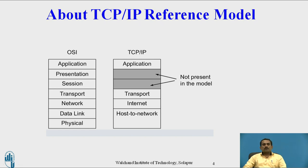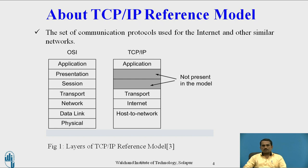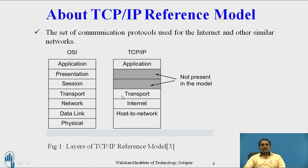TCP/IP Reference Model is the set of communication protocols used for the internet and other similar networks. The OSI Reference Model contains seven layers: Physical Layer, Data Link Layer, Network Layer, Transport Layer, Session Layer, Presentation Layer, and Application Layer. The TCP/IP Reference Model contains only four layers: Host to Network Layer (also called Network Access Layer or Network Interface Layer), Internet Layer, Transport Layer, and Application Layer.